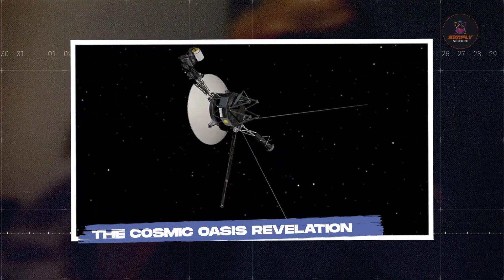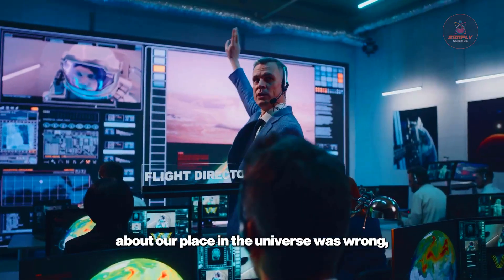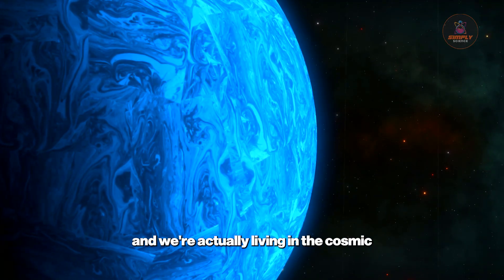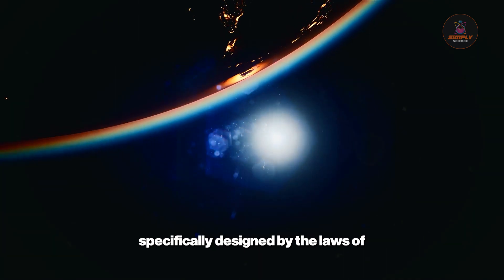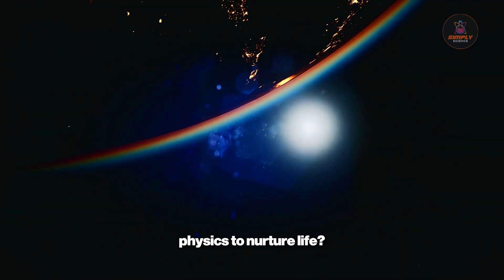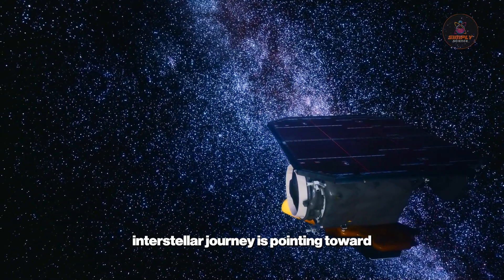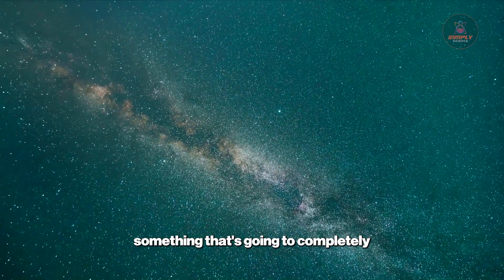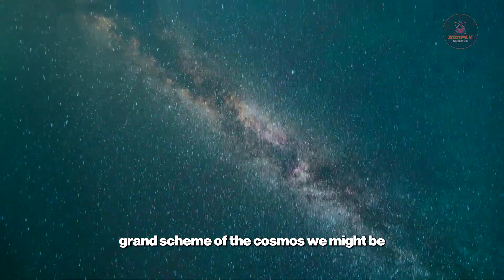What if everything we thought we knew about our place in the universe was wrong, and we're actually living in the cosmic equivalent of a Garden of Eden that was specifically designed by the laws of physics to nurture life? The final revelation from Voyager 1's interstellar journey is pointing toward something that's going to completely revolutionize how we see ourselves in the grand scheme of the cosmos.